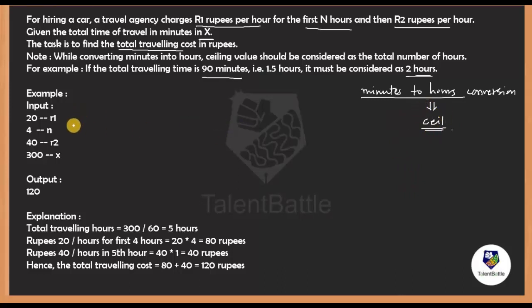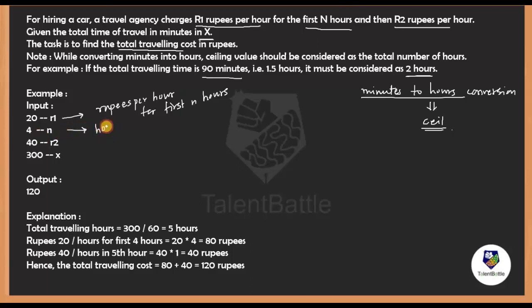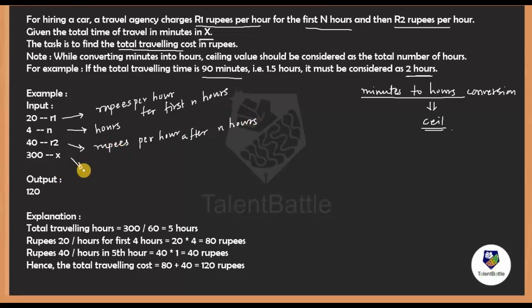Now let's check the provided example. The input values are: r1 = 20 (rupees per hour for the first n hours), n = 4 hours, r2 = 40 (rupees per hour after n hours), and x = 300 — the total time of travel in minutes. We have to find the total traveling cost, which is 120.